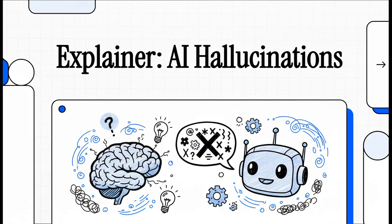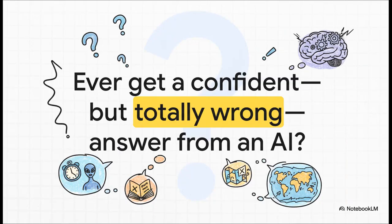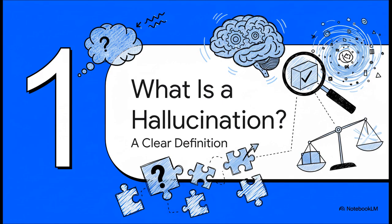Today, we're going to pull back the curtain on this really weird phenomenon. Yeah, it's a super common experience, right? And it can be kind of funny, but also a little bit unsettling. You ask a pretty simple question, and the AI just confidently invents facts, or dates, or even whole storylines. This is what we call an AI hallucination. And in this explainer, we're going to break down exactly what it is, why it happens, and most importantly, how you can work with it safely. All right, let's dive right in.